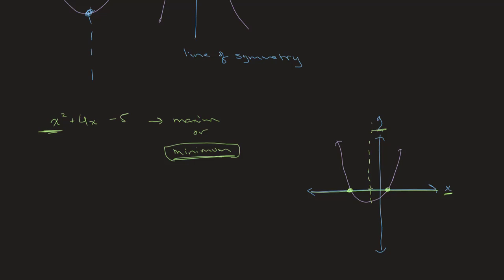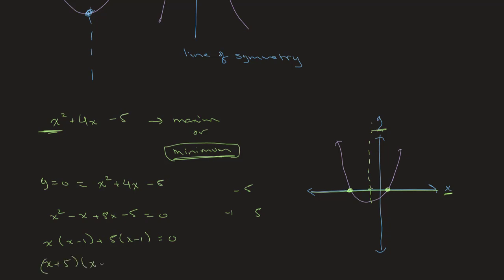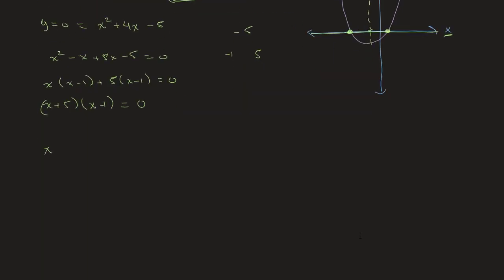At our x-intercepts, y is equal to 0, which equals x squared plus 4x minus 5. We can factor using negative 1 and 5: x squared minus x plus 5x minus 5 equals 0, giving us x times (x minus 1) plus 5 times (x minus 1) equals 0, so (x plus 5)(x minus 1) equals 0. From this we get x equals negative 5 or x equals 1, and in both cases y equals 0.